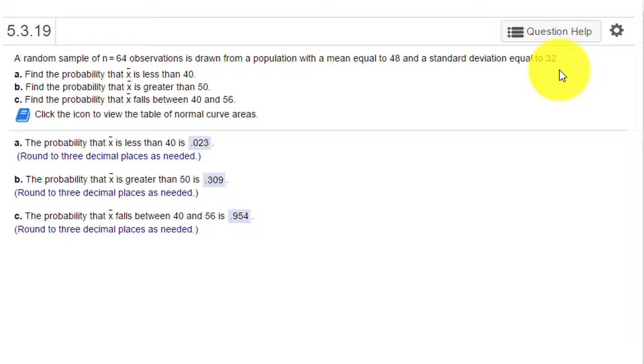Remember that we need to identify, in order to use the standard normal curve, the mean and standard deviation of the sample. What we're given are the mean and standard deviation of the population. So this is mu equal to 48 and sigma equal to 32. We have 64 observations and because that's greater than 30, which is our rule of thumb, this is a large sample.